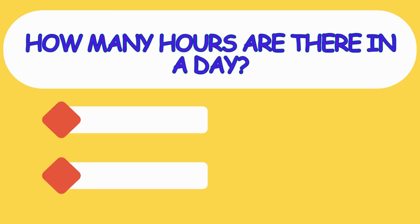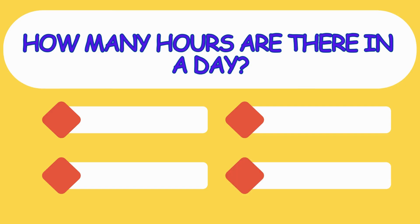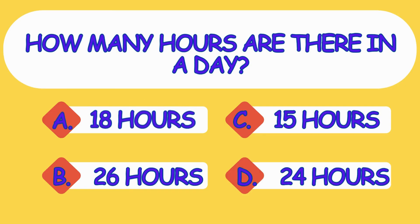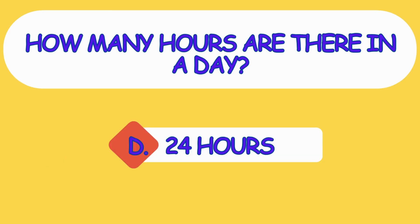How many hours are there in a day? A. 18 hours, B. 26 hours, C. 15 hours, D. 24 hours. The answer is option D, 24 hours.